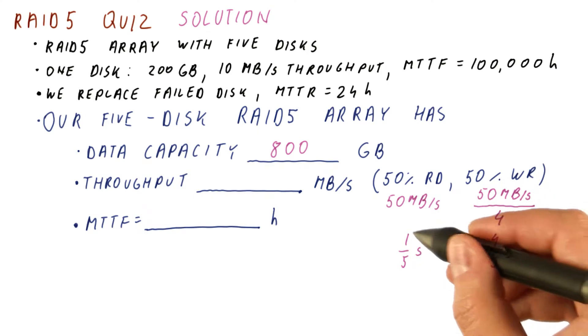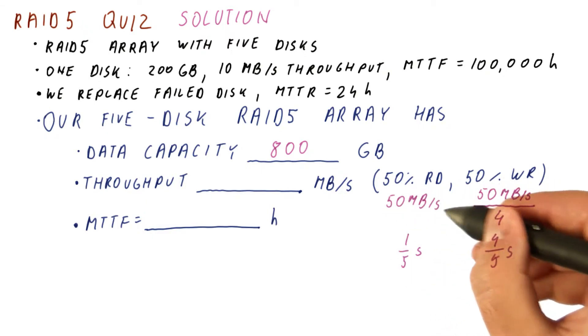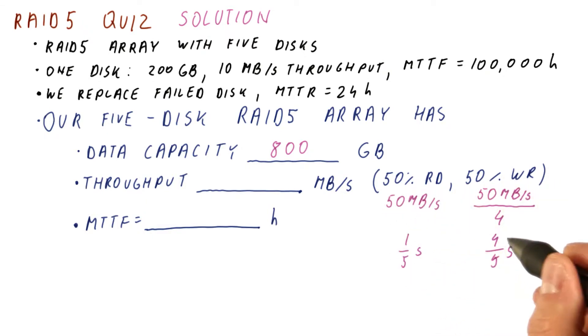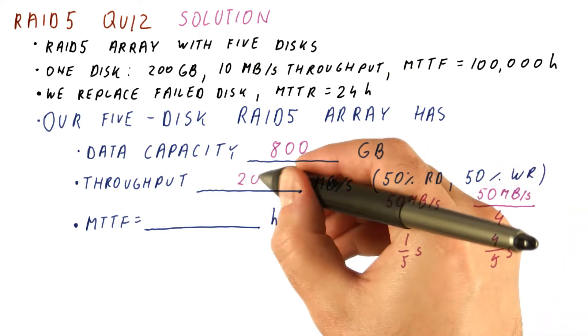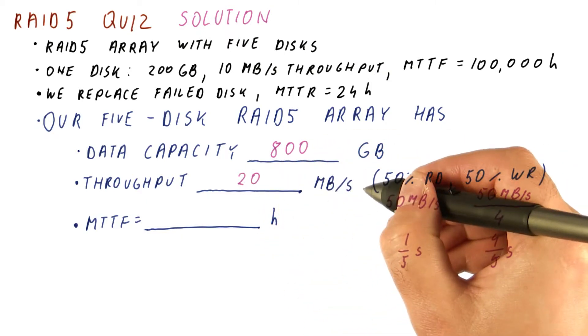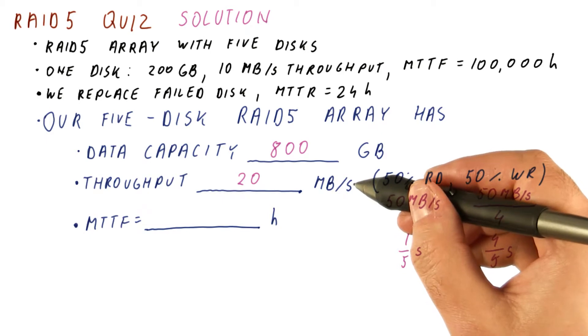That means that in our one-fifth of a second, we will do 10 megabytes of reads. And then in the remaining four-fifths of that second, we will do 10 megabytes of writes. That way, we achieve the same amount of reads and writes, and the overall throughput is 20 megabytes per second. This is much better than in RAID 4.